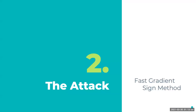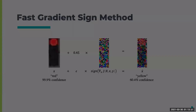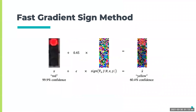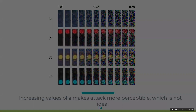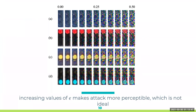After that, we have to perform the attack, and we use the Fast Gradient Sign Method. It takes the original image and applies a perturbation to create the adversarial image. The perturbation is generated by taking the sign of the gradient of the cost function with respect to the input x, and then multiplying it by a factor epsilon. Increasing the value of epsilon makes the attack more perceptible, which is not ideal. We are hence aiming for a successful attack with as low a value of epsilon as possible.